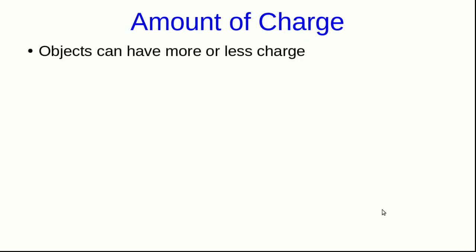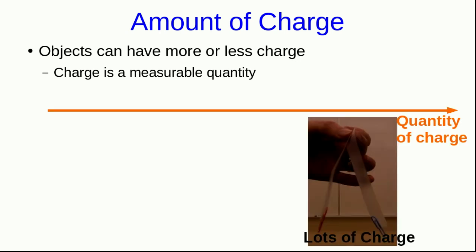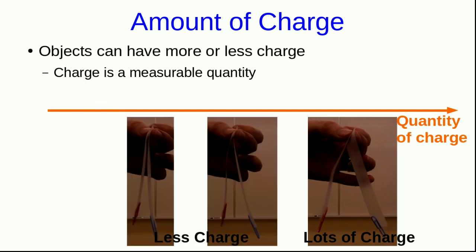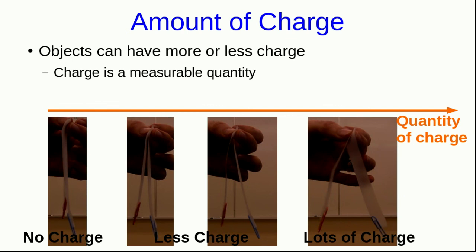One other thing to point out before I finish up is that objects can have more or less charge. Being charged or uncharged isn't just an on-off thing. Things can have large quantity of charge, or they can have small quantity of charge. Or in other words, charge is a measurable quantity. Our indication of how much charge an object has is how strong the electrical interactions are that it has with things around it. And so, one of the clearest demonstrations in the videos I've shown has been with the two strips of tape repelling each other. They started off with lots of charge and repelled each other very strongly. And I gradually neutralized them so that we saw them with less and less charge, exerting smaller and smaller forces until they were finally neutral when there was no charge on them.